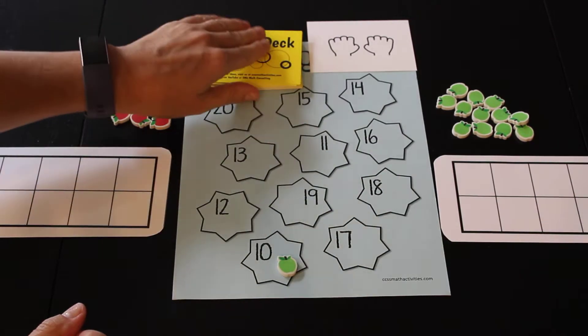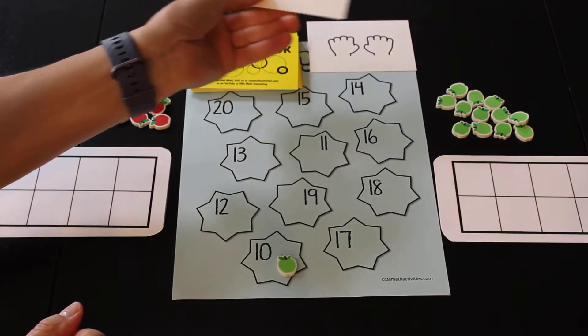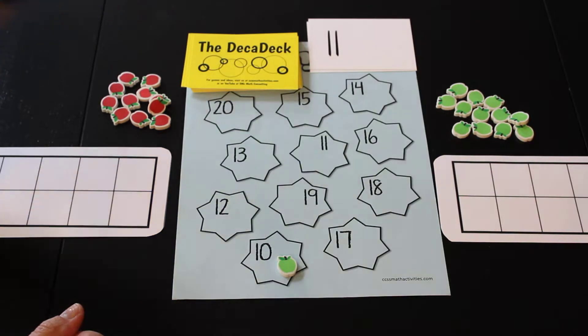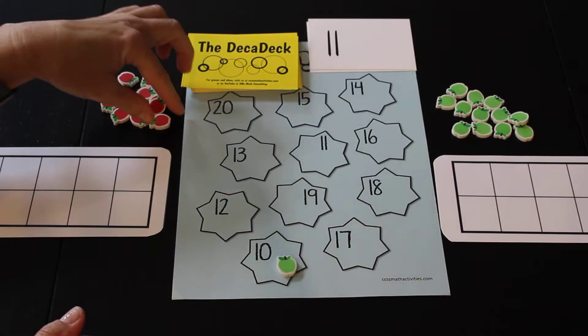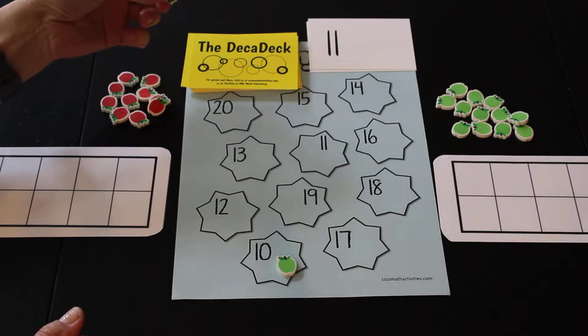All right, let's see what I get. Oh, this is a 2 in tallies, I believe. So 2 plus 10 is 12. So I'm going to take my marker and find the 12 and put it here, not covering it up.